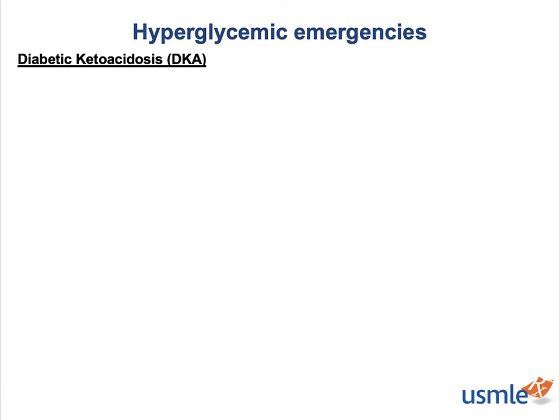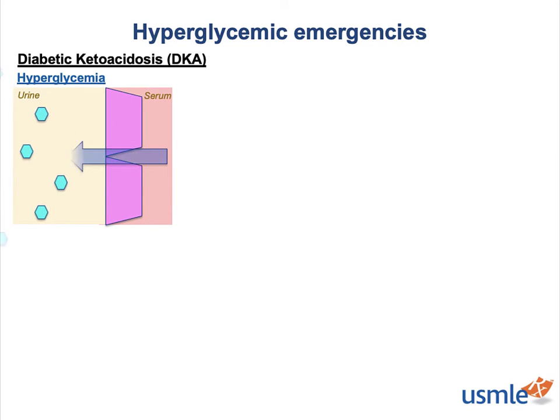Let's start with diabetic ketoacidosis, the more physiologically complex of the two major hyperglycemic emergencies. DKA is a syndrome that essentially stems from three major issues. First, these patients are almost by definition hyperglycemic, which leads to dehydration. The reason they're so dehydrated is the same reason that normal diabetic patients have polyuria: increased blood glucose leads to increased glucose in the urine and subsequently increased water loss via osmosis.